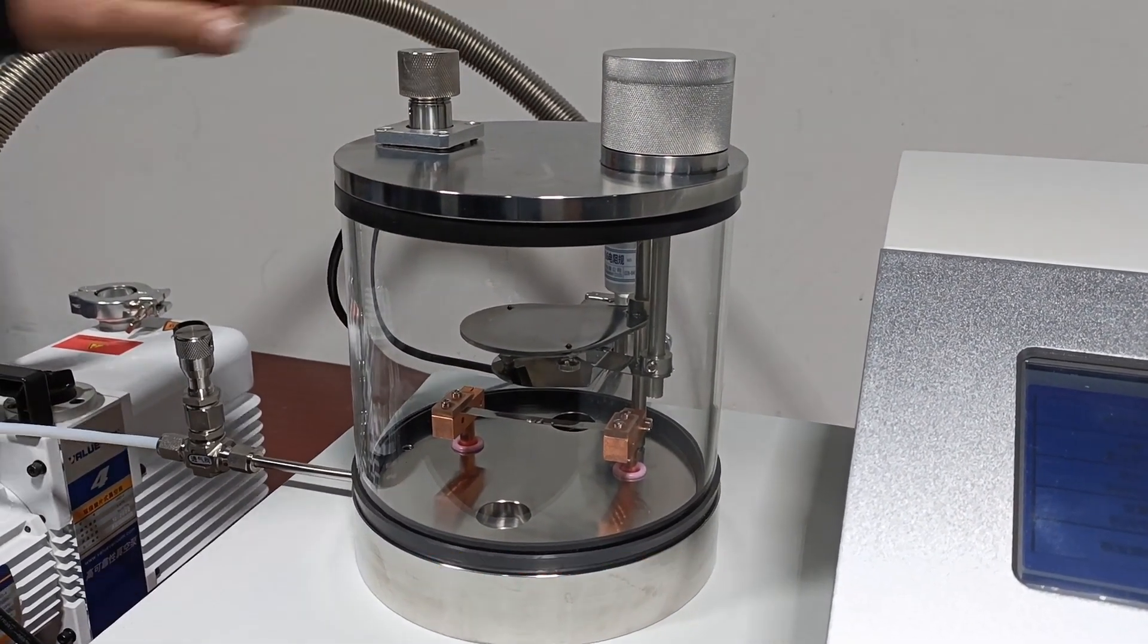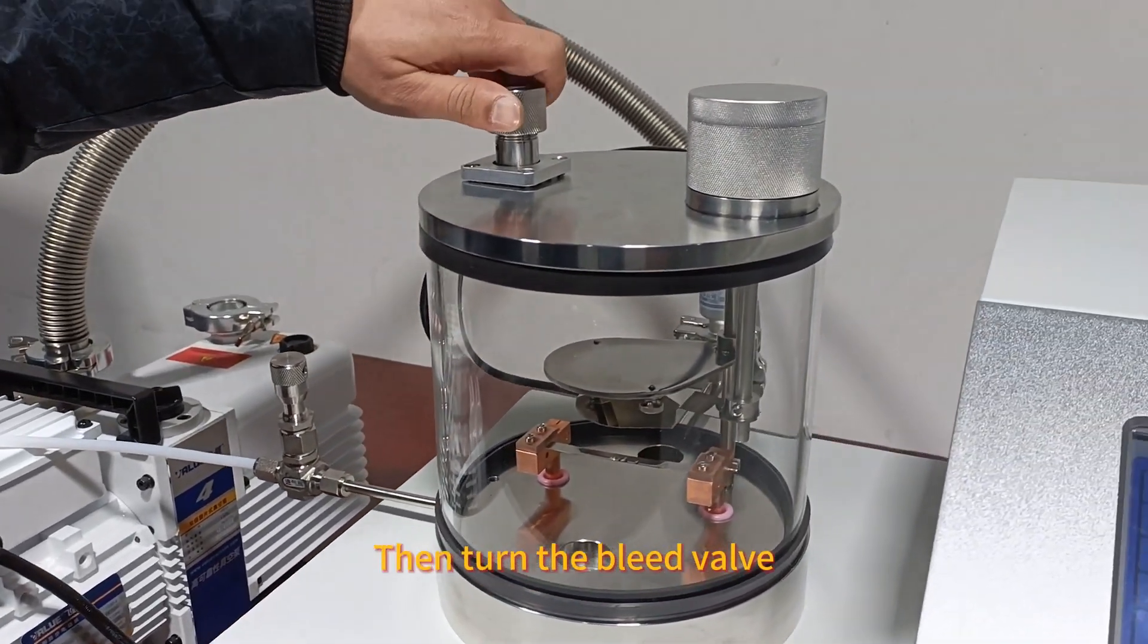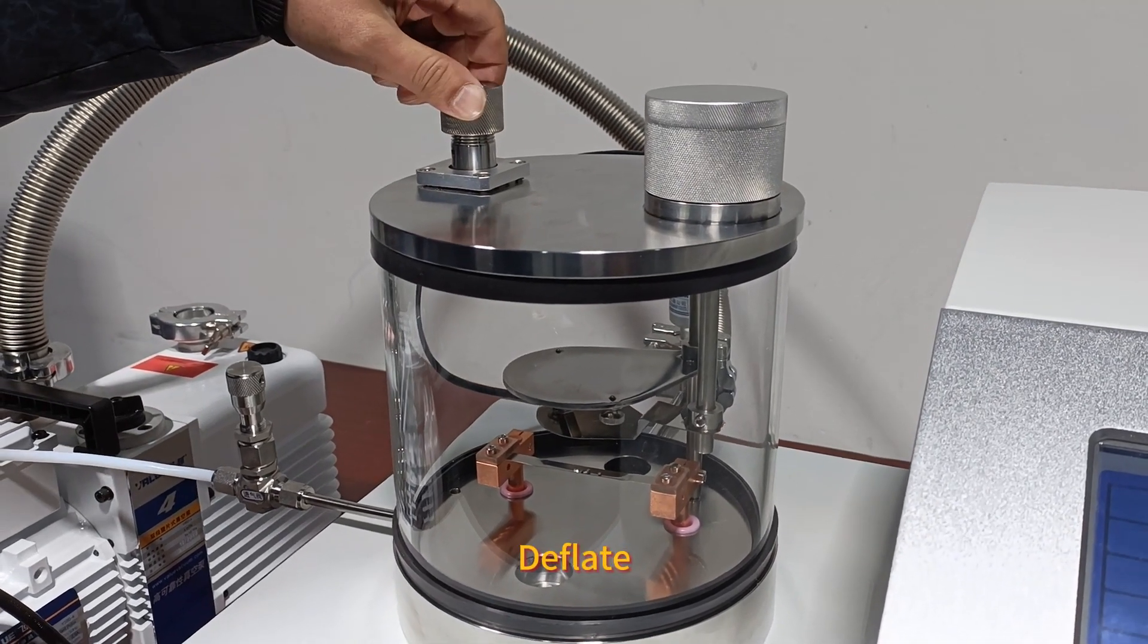Open the vent valve. Turn off the vacuum pump first, then turn the bleed valve to deflate.